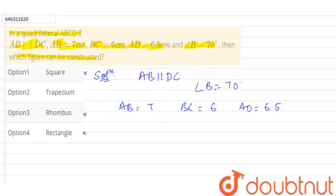So angle B is 70 degrees. Which one is our option? Trapezium, option 2nd. That will be our answer. Thank you.